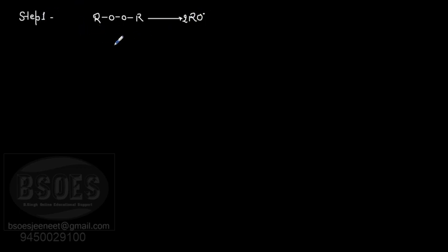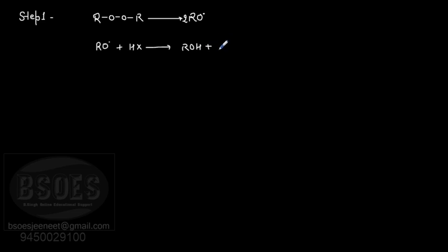The free radical that is generated further reacts with the hydrogen halide (HX), and from this step, the X free radical is formed. This is the chain initiation step - the chain has started.